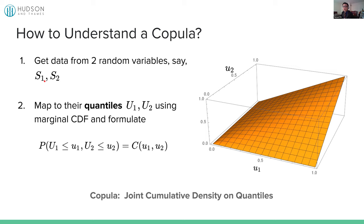The second thing is you want to map them to quantiles U1 and U2, which will be uniform in [0,1] using their marginal cumulative density functions. Then you calculate the joint cumulative density on the quantiles — this is denoted as capital C, which is the copula's definition. If you plot this in 3D, the shape monotonically goes up, which makes sense because this is a joint cumulative density — moving U1 and U2 larger gets you closer to one. We will not use this definition for pairs trading directly, but everything derives from here.